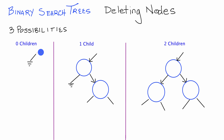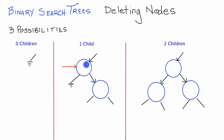Now let's look at the next case where we want to delete a node with one child. Here I've drawn a deletion pointer pointing to the node that we want to delete, and this node has one child node, which may be pointing to a whole other subtree via its left and right pointers. We want to make sure we still have this part of the tree once we've deleted this node, so we place a pointer here to mark this child node so we don't lose it.